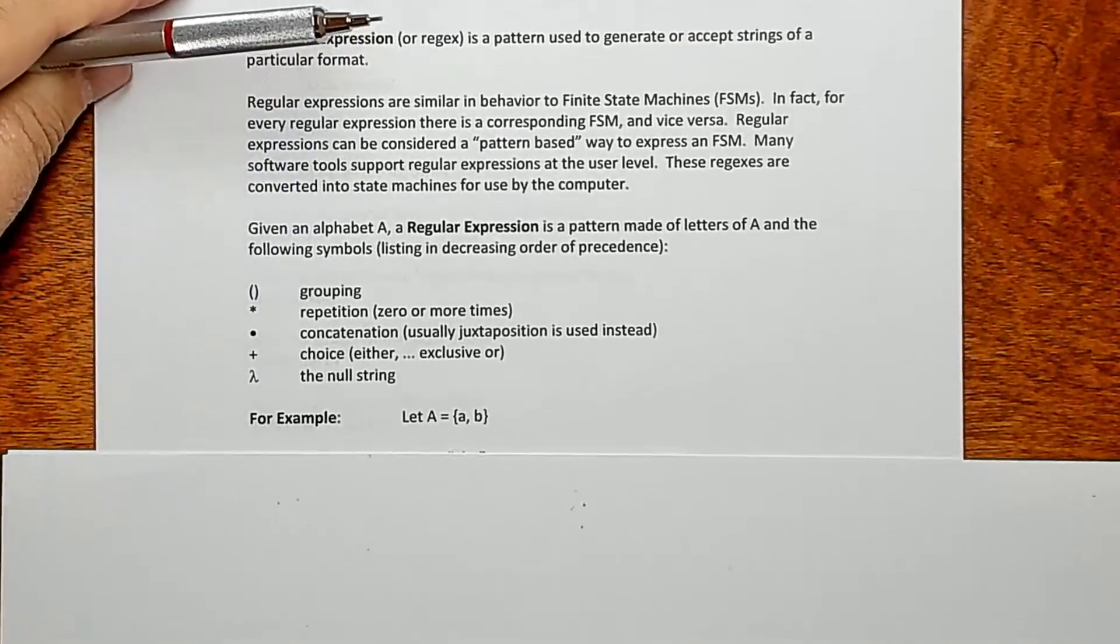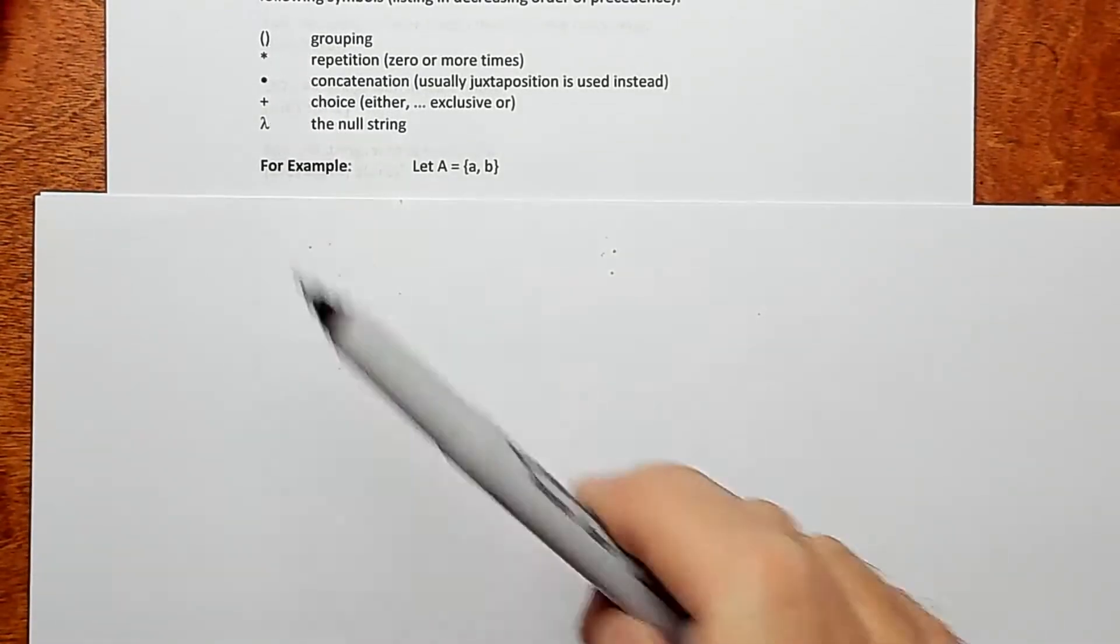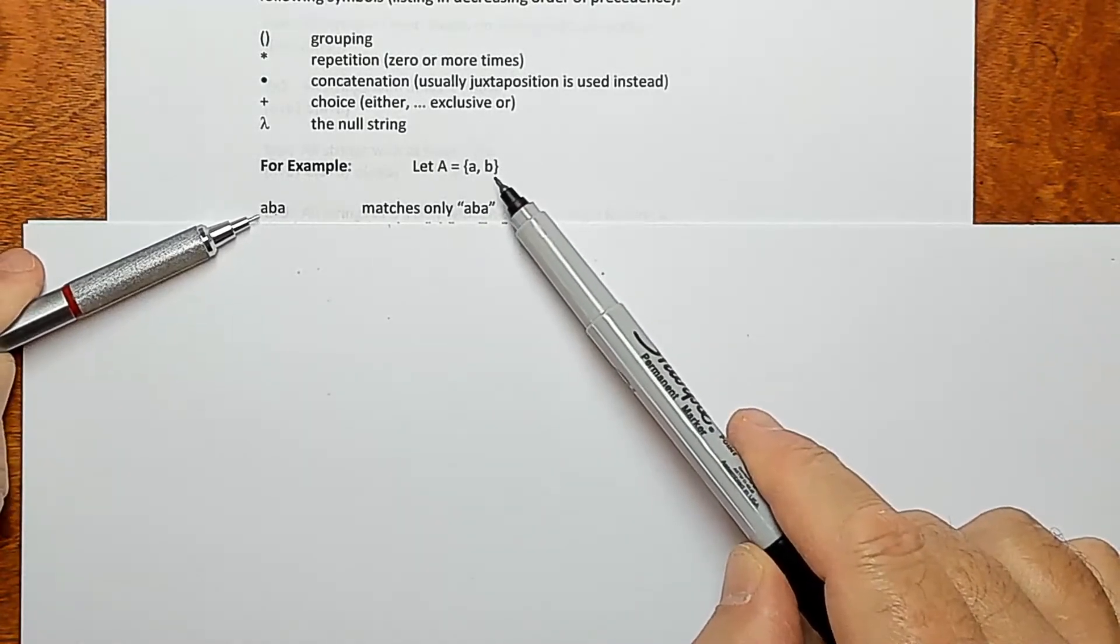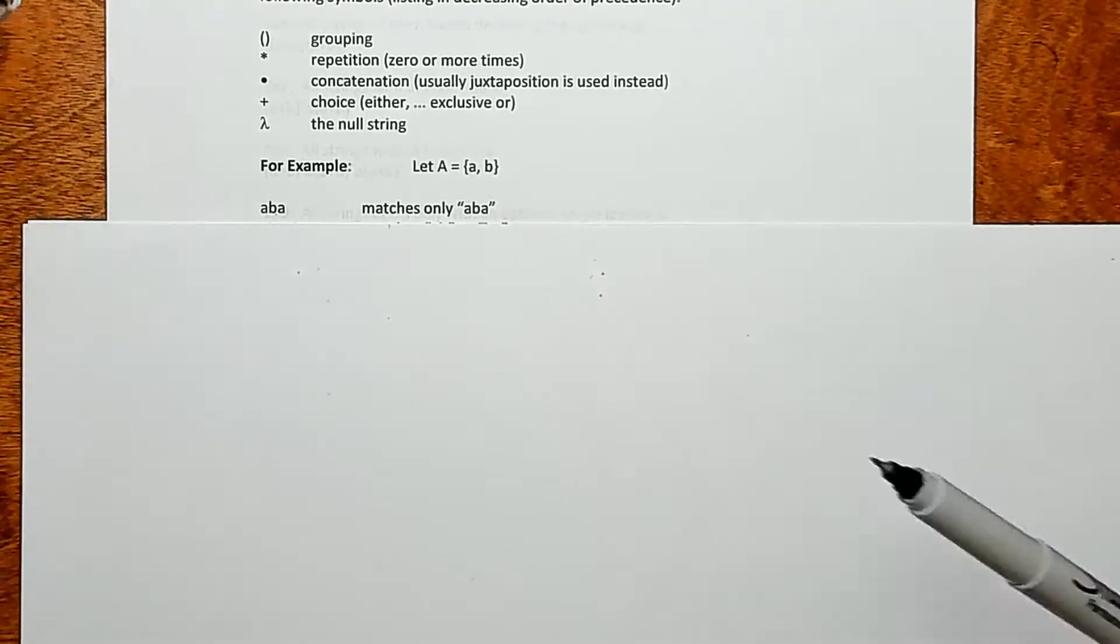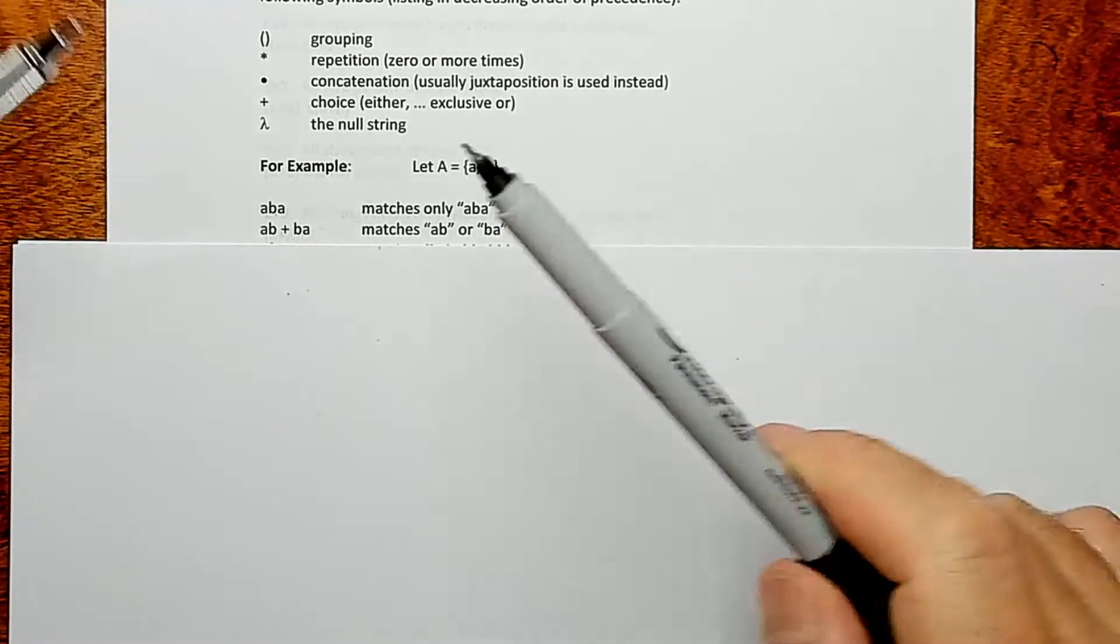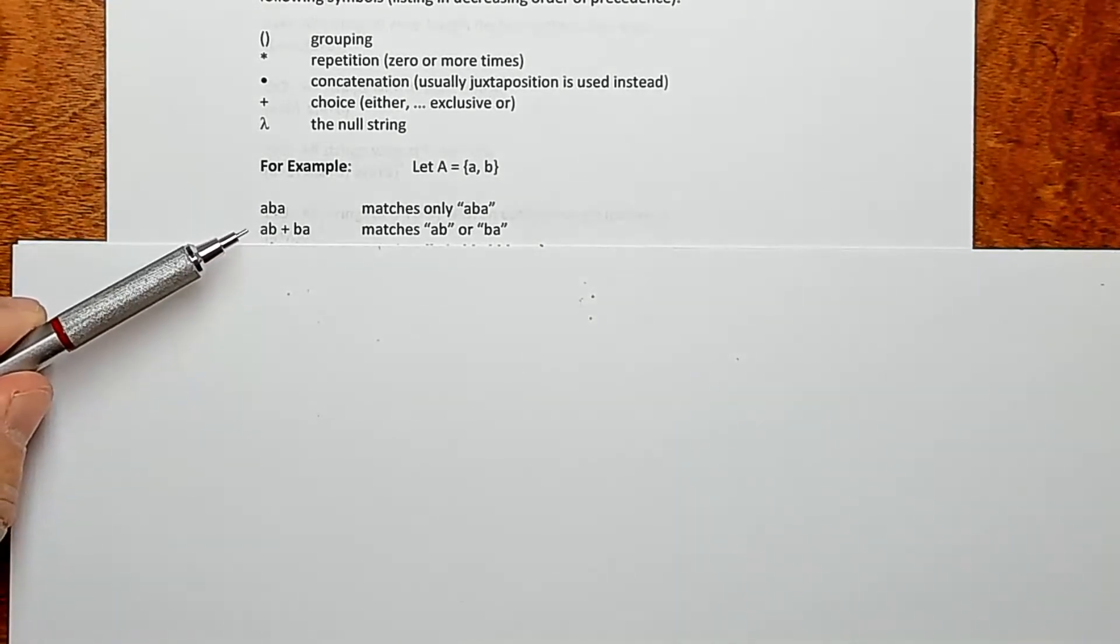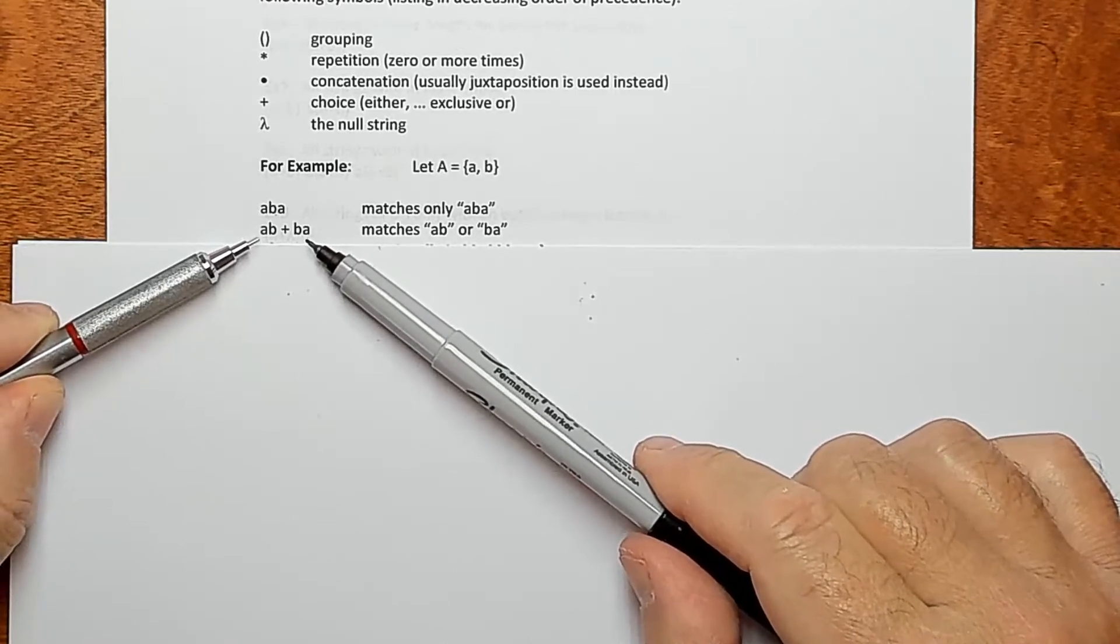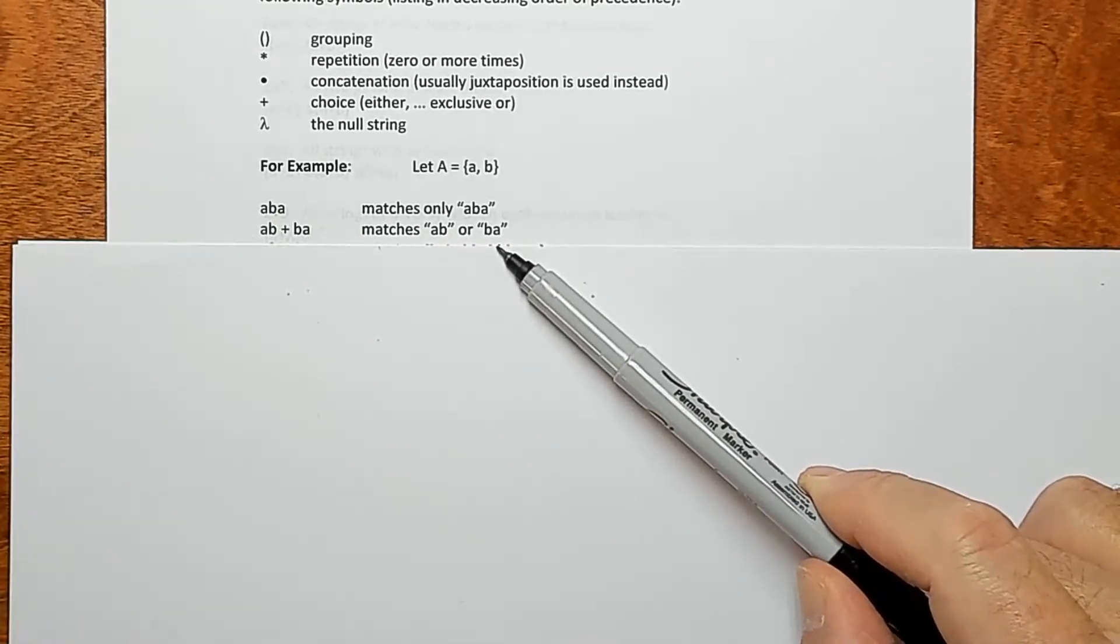So the best way to understand this is just get into some examples here. So let's say we have the alphabet AB and then we have our little symbols here. So we can construct various regular expressions. So just generating or creating this pattern ABA, this will match strings of the form ABA. So it will only match ABA and that's it. So if you were looking for a file and you knew the name, then you would use this. But let's say you're not sure if the file's named AB or maybe it's named BA. You would use the choice operator here.